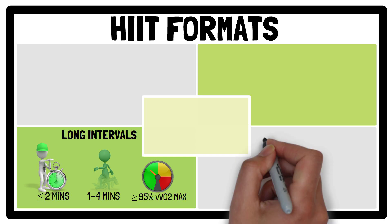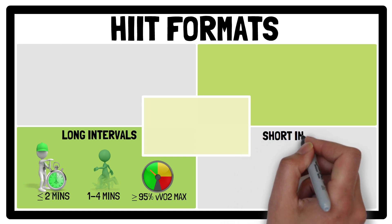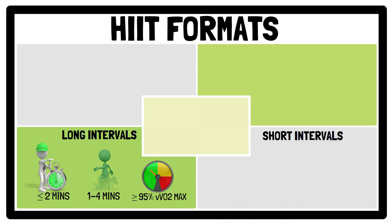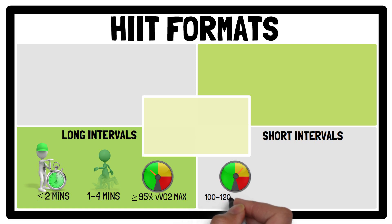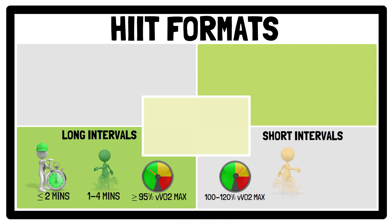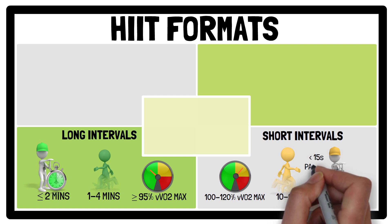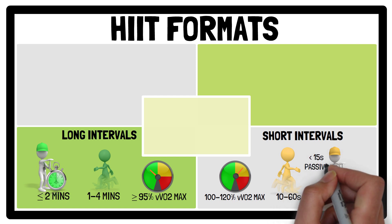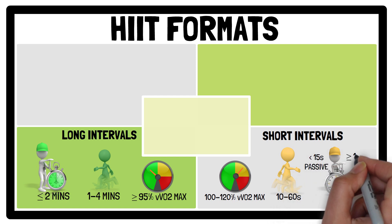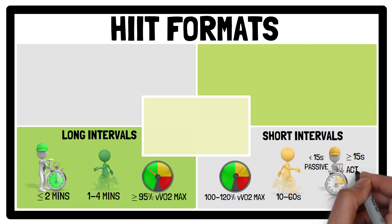Short intervals also involve sub-maximal high-intensity efforts, however they are performed at approximately 100–120% of velocity at VO2max and last between 10–60 seconds, with recovery between efforts typically being less than 15 seconds if the recovery is passive, or more than 15 seconds if the recovery is active.